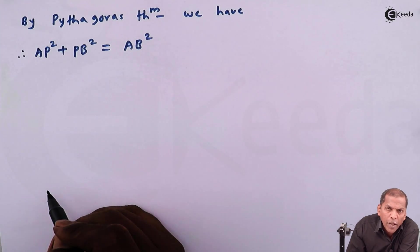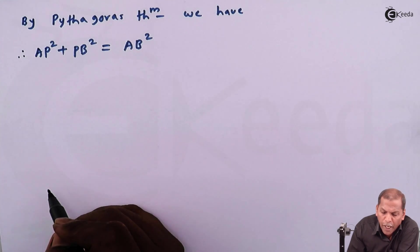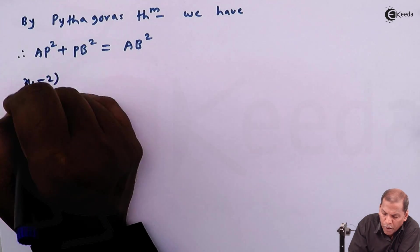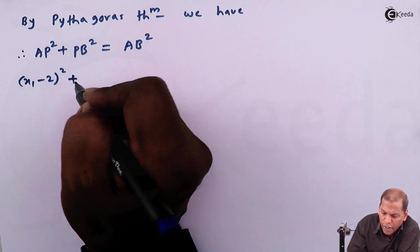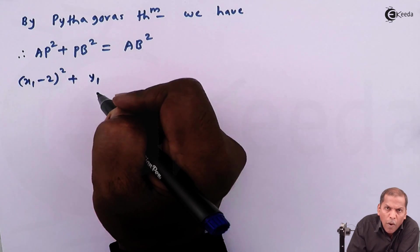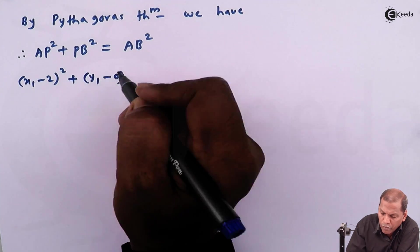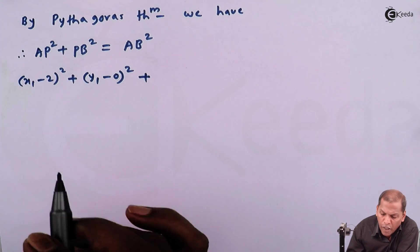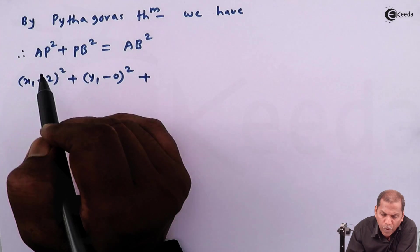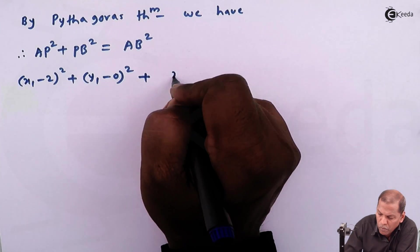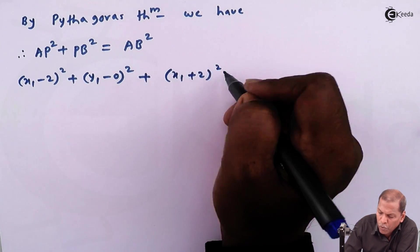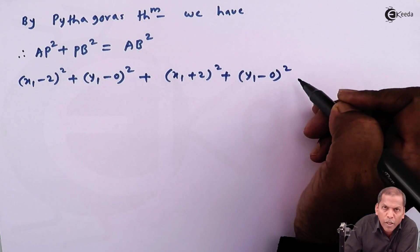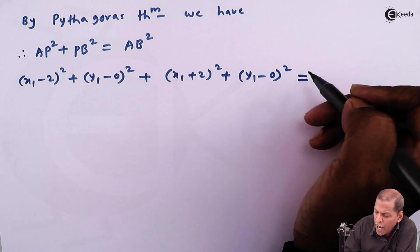First we apply the distance formula between A and P: (x1 - 2)² + (y1 - 0)². Then we apply the distance formula between P and B: (x1 + 2)² + (y1 - 0)², and that equals the distance formula applied between A and B.